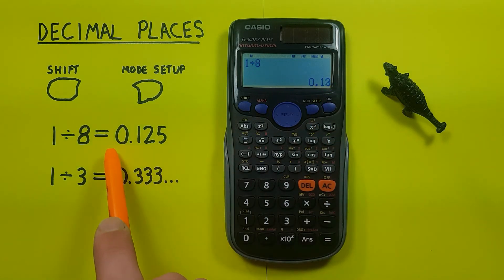That's because the 0.125 has been rounded to two decimal places and that 2 has been rounded up to a 3 because of the 5 here.